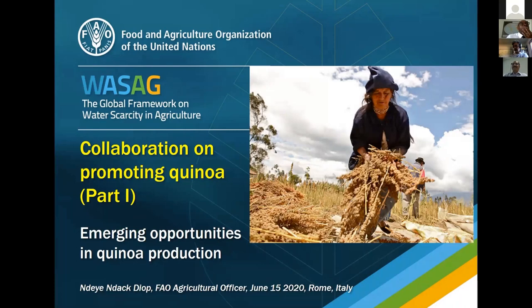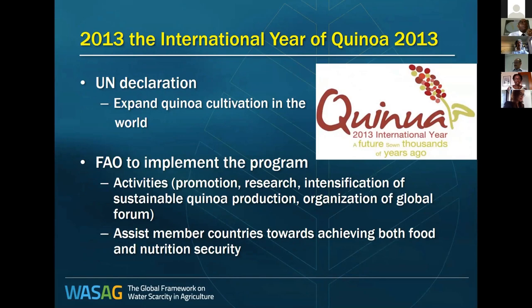Good afternoon, everybody. I would like to introduce quinoa production through FAO's work. This presentation is being made on behalf of the Agricultural Officers and colleagues from the regional and subregional offices who implemented all these projects. The United Nations declared 2013 as the International Year of Quinoa, with the objective to increase awareness of quinoa as a strategic food for food security and to promote its production and consumption. FAO was designated as the technical secretariat for the International Year of Quinoa to implement the program globally, including promotional activities, research, and crop intensification.